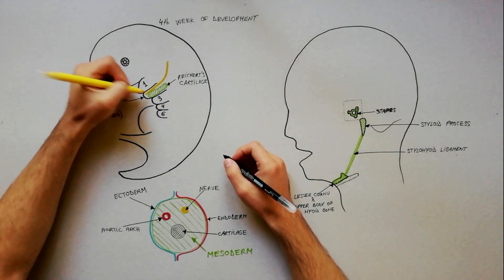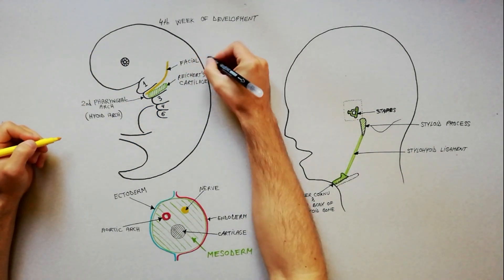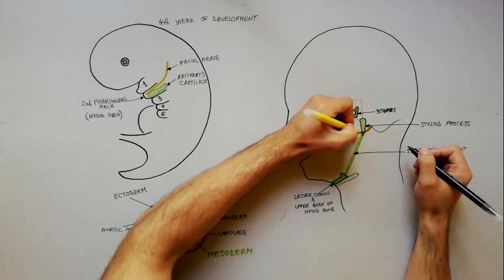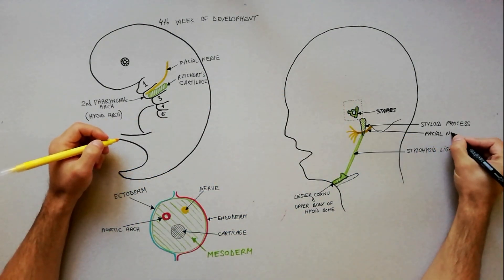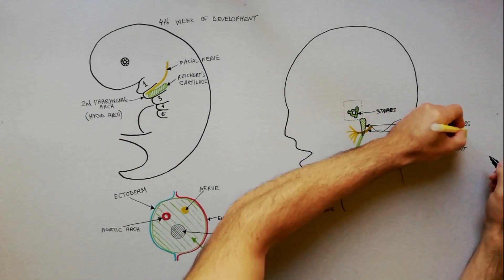The nerve of the second pharyngeal arch is the facial nerve. The facial nerve innervates all the following muscles derived from the second pharyngeal arch: